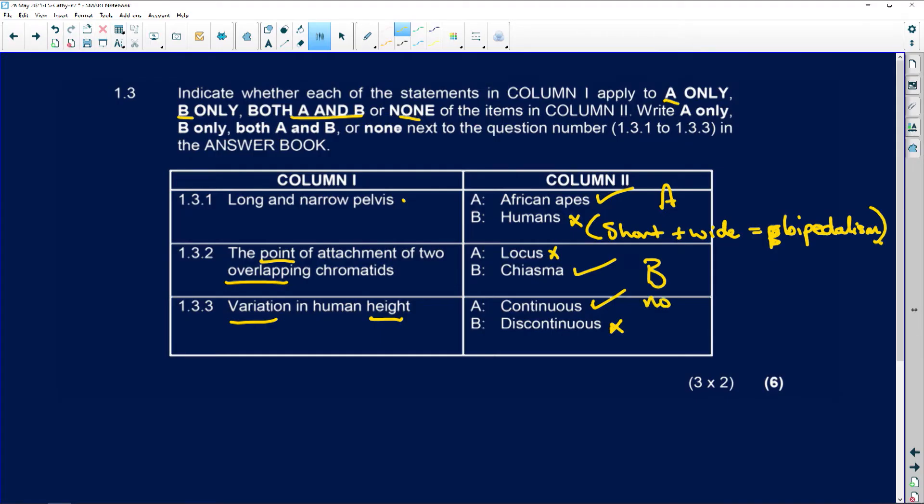A continuous variation will be, height would be from the shortest person possible to the tallest person possible and everything in between. So in other words, it's continuous. It carries on. So there are no distinct points.